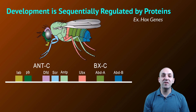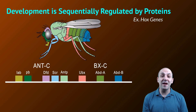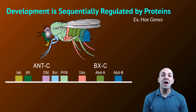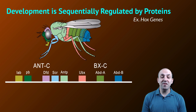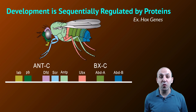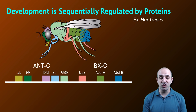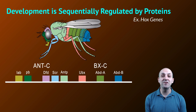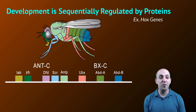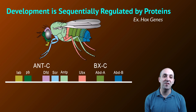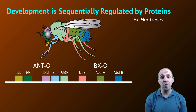I'm sure you won't be surprised to learn that development is regulated through the actions of proteins. There are particular families of proteins that are responsible for the development of multicellular organisms. Probably the most famous of these are the homeobox, or Hox genes, that regulate the development of different body segments. What we see here is a diagram of a fruit fly and the different Hox genes that are expressed in each segment during the development of the fly.